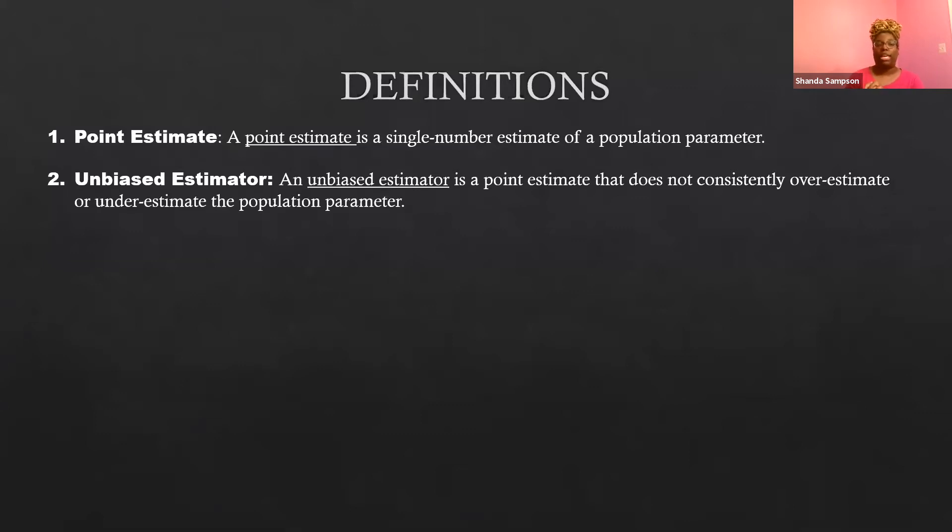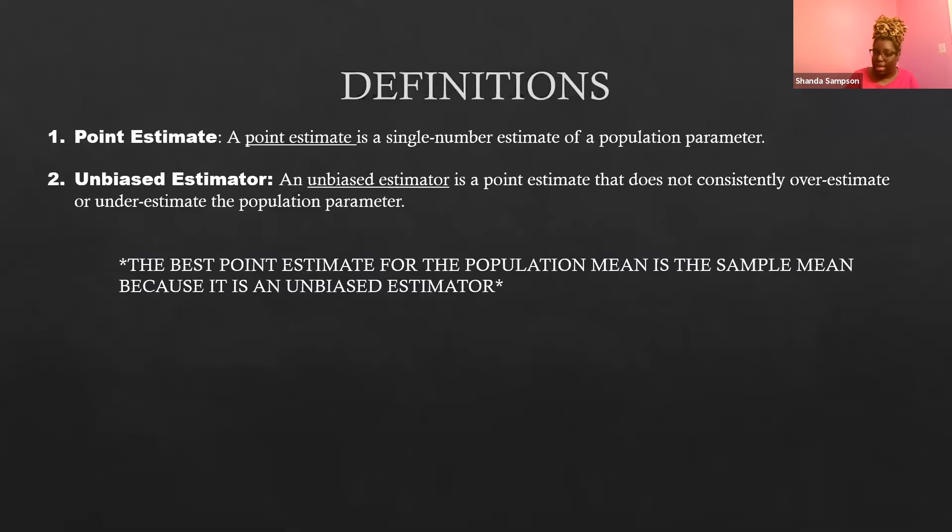And this estimator also needs to be unbiased. Unbiased means that it does not consistently overestimate or underestimate whatever the population parameter that you're talking about. So let's think about it this way. If you have the mean, if you're trying to find something centered around the data, and we have three ways of determining center, right? We have mean, median, and mode.